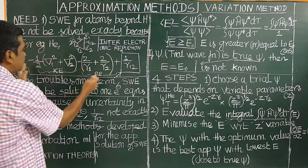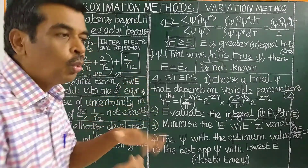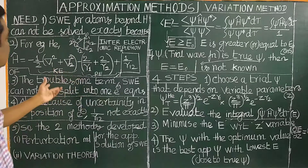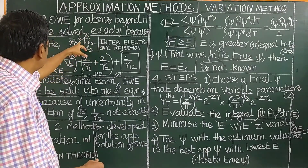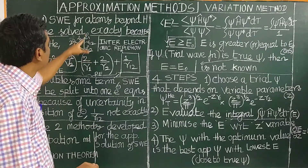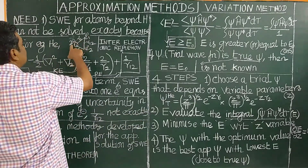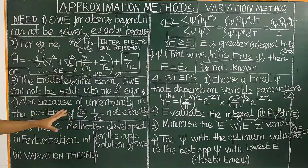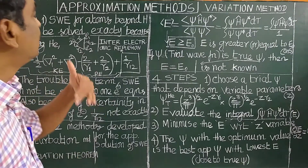You have two electrons — the kinetic energy term and potential energy term can be split into two one-electron equations, whereas the inter-electronic repulsion term cannot. Also, there is another reason: because of uncertainty in the position of electrons, according to Heisenberg's uncertainty principle, the position of the electron is not exactly known. Therefore, 1/R₁₂ — the distance between the two electrons — cannot be determined exactly, making it not possible to solve the Schrödinger wave equation exactly.